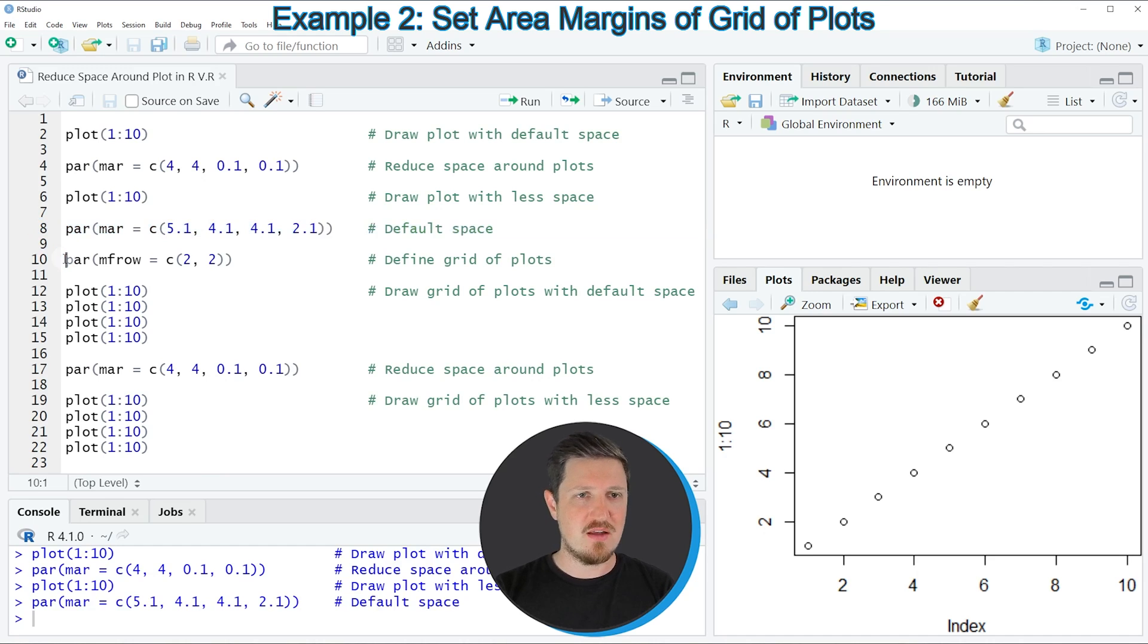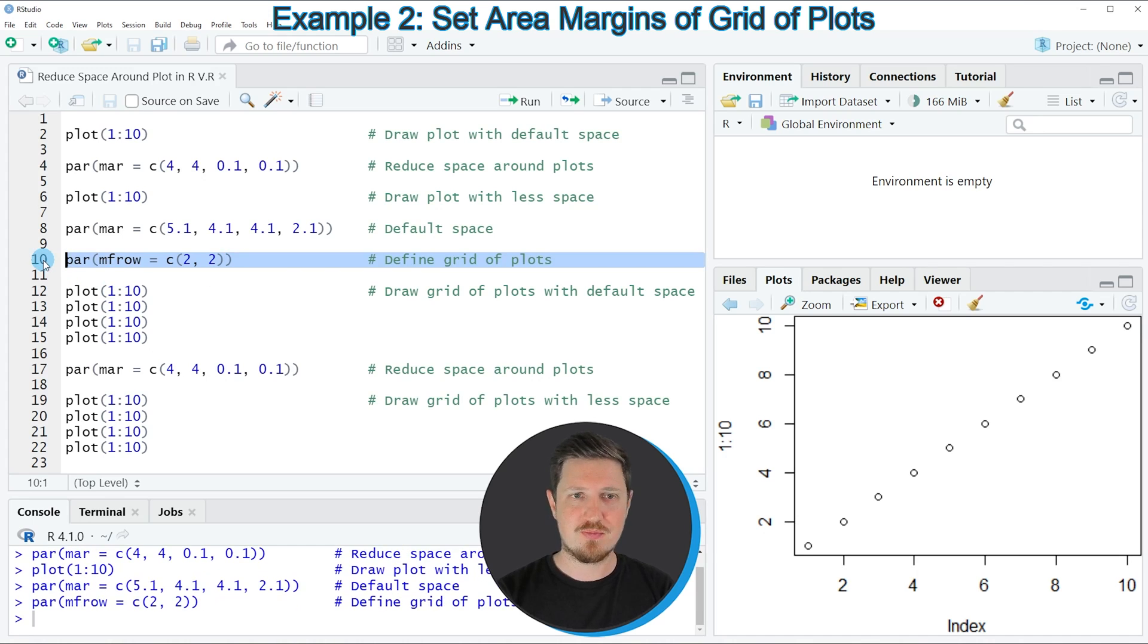Then in the next step, we also need to apply the par function once again to specify that we want to create a grid of plots. In this case, I want to create a grid of two rows and two columns. If you run line 10, our options for the plotting window are updated once again. And then in lines 12 to 15, we can draw four plots in a grid of plots.